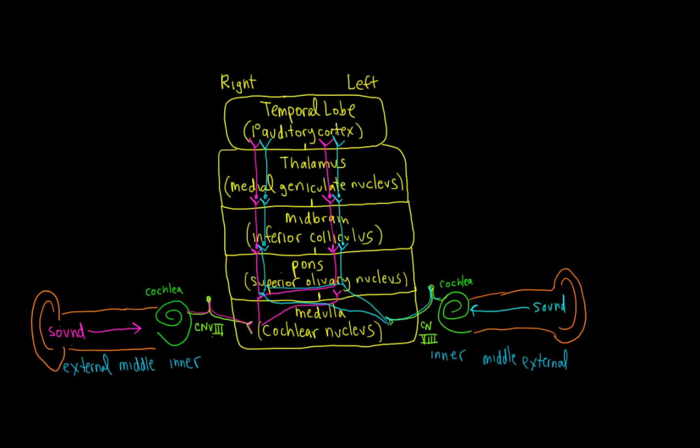The transverse temporal gyri are located on the superior surface of the temporal lobe. It's very important that we have bilateral representation with both temporal lobes.